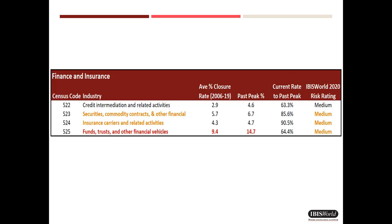Like last week, I'll disaggregate and unravel as the proof of the pudding is in eating granular. In this table, I consider the finance and insurance group. Here you can see the average closure rates over the 2006 through 2019 period, the past peak over this period, and the ratio of the 2019 rate to the past peak. I also include IBISWorld's industry risk ratings for these industry segments. I red flagged areas of greatest concern, and yellow flagged those that require monitoring or that I have some cautionary remarks about.